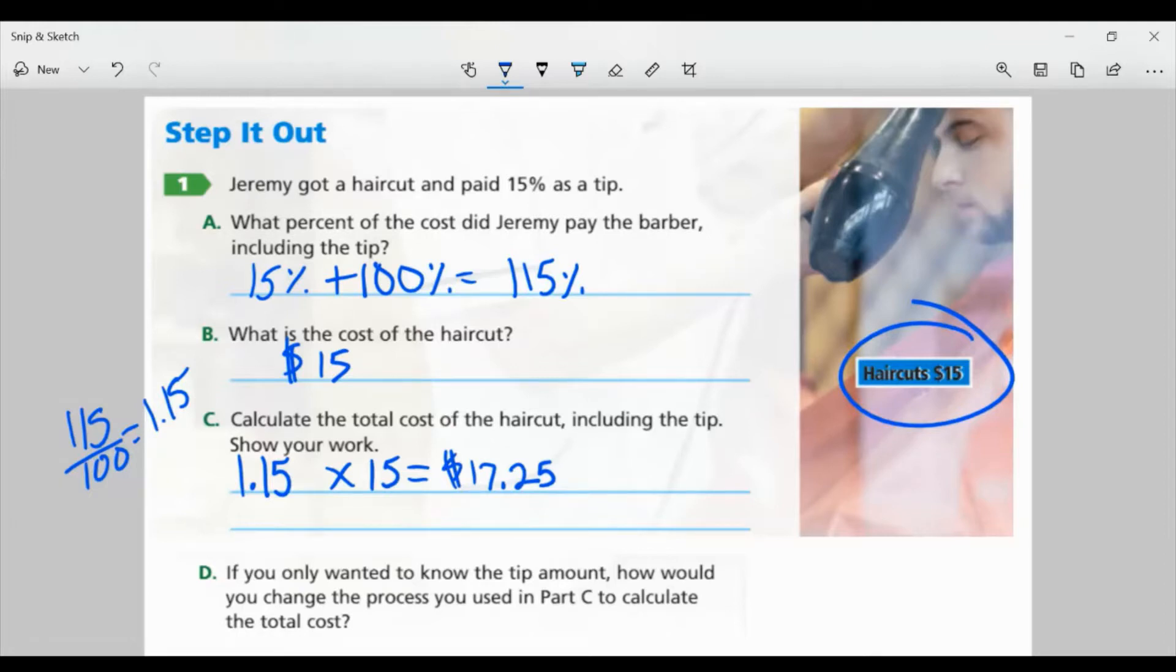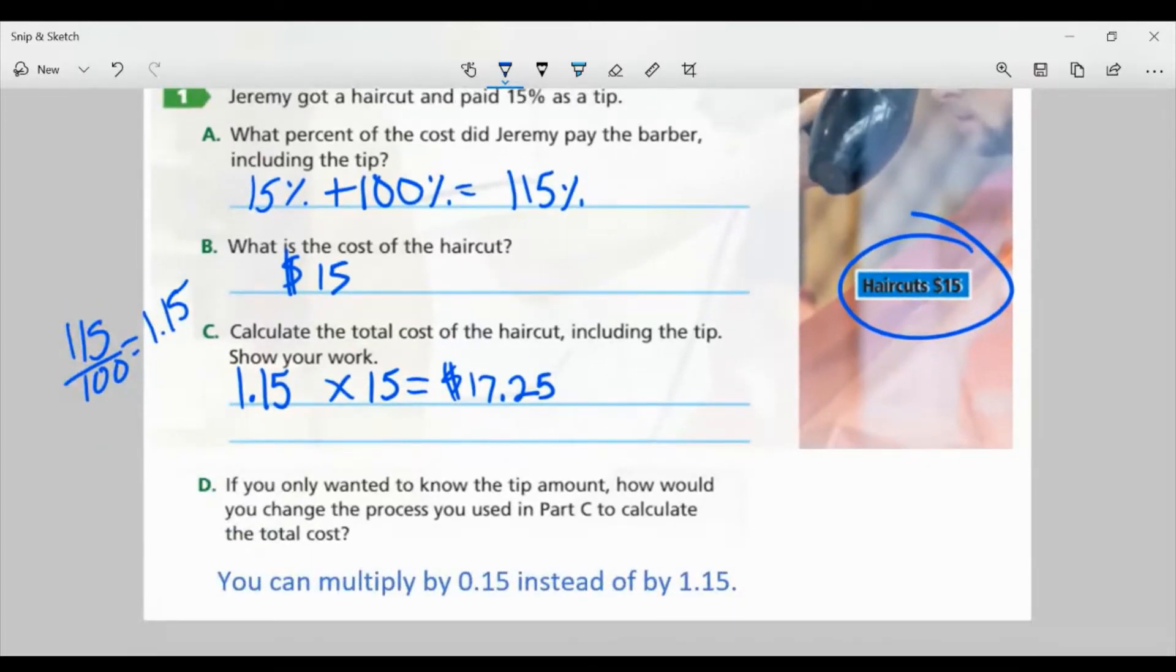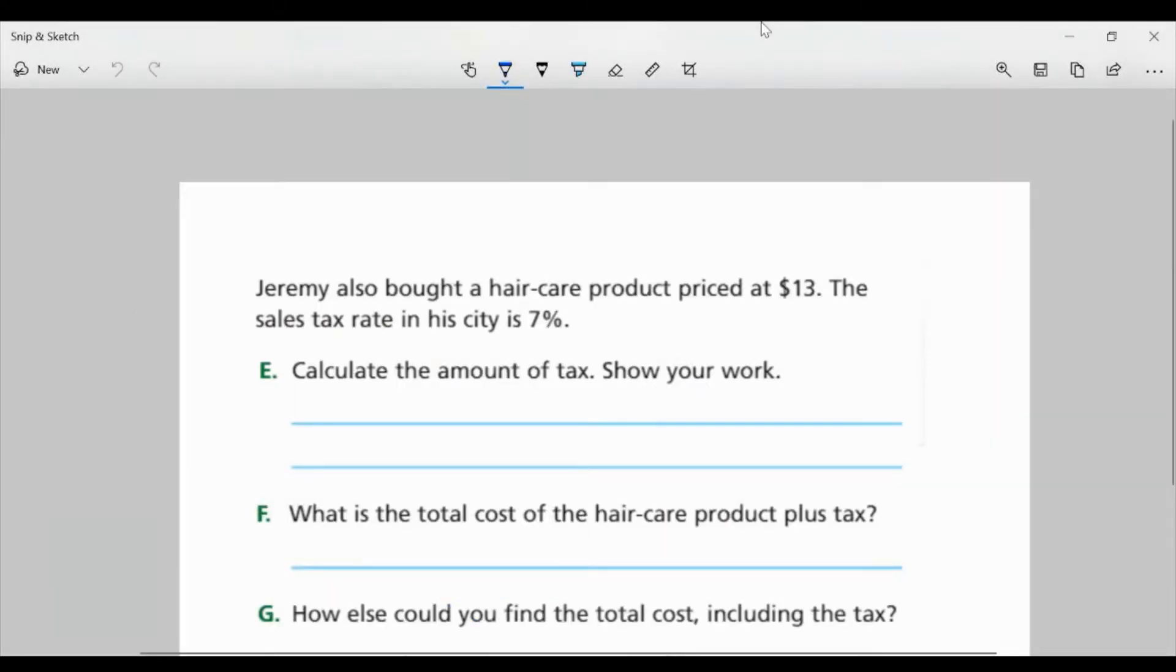Now, Part D: If you only wanted to know the tip amount, how would you change the process you used in Part C to calculate the total cost? Well, just like I mentioned, we could multiply by 0.15 instead of by 1.15, right? That would give us how much he paid as far as the tip, and then add that to the $15. But this way up here is just an easier, quicker way to find out the exact cost that he paid with the tip.